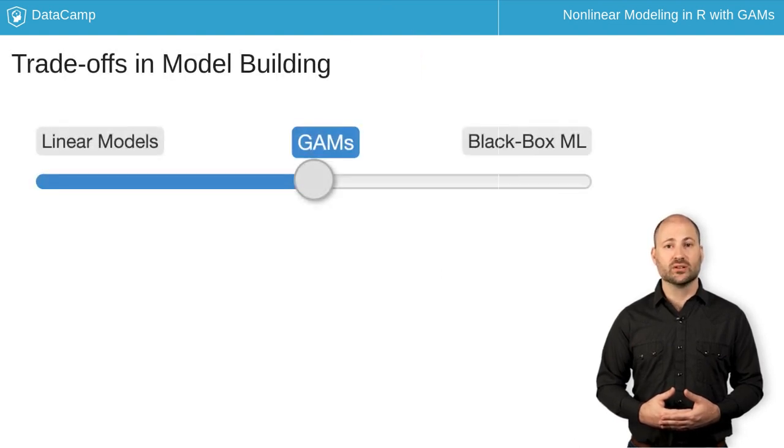Whenever we build statistical models, we face a trade-off between flexibility and interpretability. GAMs offer a middle ground between simple models, such as those we fit with linear regression, and more complex machine learning models like neural networks.